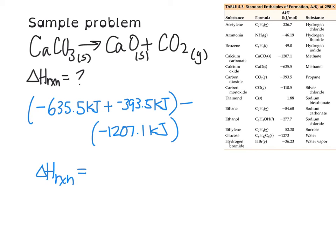If I break it into steps and take negative 635.5 and negative 393.5 and add them together, I get negative 1029, and then I'm going to subtract negative 1207.1. So 1029 and 1207.1, I get 178.1 kilojoules, and it is positive. So what I'm seeing is that the heat generated is positive, therefore it is endothermic.